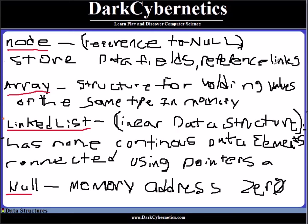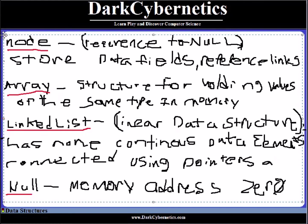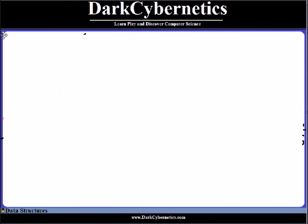We've been over arrays and we went into linked lists and talked about null. At the operation level for linked lists, we can really think about what we need to do when we work on our objectives. There are advantages of using linked lists, and there are also disadvantages in using all different types of data structures. No one data structure can solve all problems.